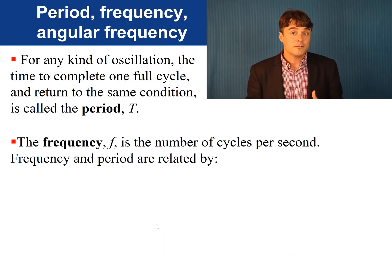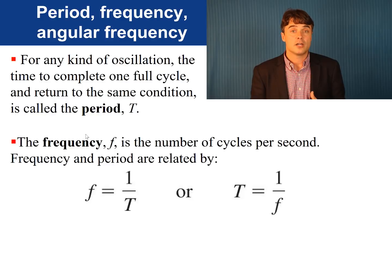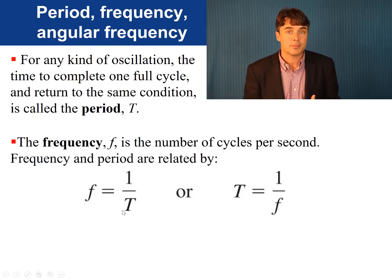Now that we've defined the period, we can define the frequency, F, as the number of complete oscillation cycles per second. The equation for frequency is 1 over the period, capital T. Or, if you happen to know the frequency and you need the period, the period T is 1 over F.